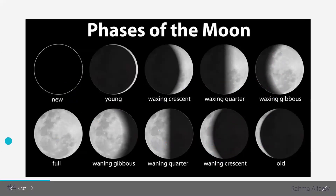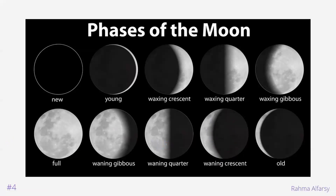In Surah al-Baqarah verse 189, Allah brings our attention to the phases of the moon, and He subhanahu wa ta'ala tells us that they are a means for people to determine time. The new moon for Muslims marks the end of the lunar month, whilst the new crescent marks the beginning of the next month.